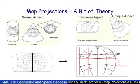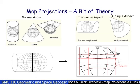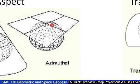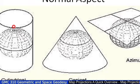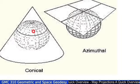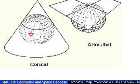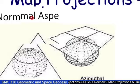We need to remember that we've got a cylinder or a cone or a plane. That's the normal aspect. In other words, the axis of the cylinder or the axis of the cone coincides with the axis of rotation of the Earth. Same with the plane, it sits at the top of the pole there. What you need to remember is the three surfaces: cylindrical, conical, azimuthal, and then you need to remember the aspect.